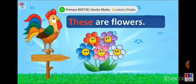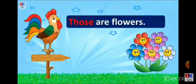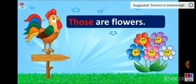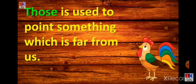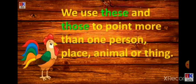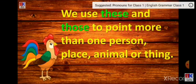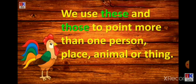'These are flowers' — many flowers are there and they are close. Now the flowers went far away, so: 'Those are flowers'. When things are many and far away, use 'those'. 'These' is used to point to things near to us, and 'those' is used to point to things far from us — for plural form. We use 'these' and 'those' to point to more than one person, place, animal, or thing.